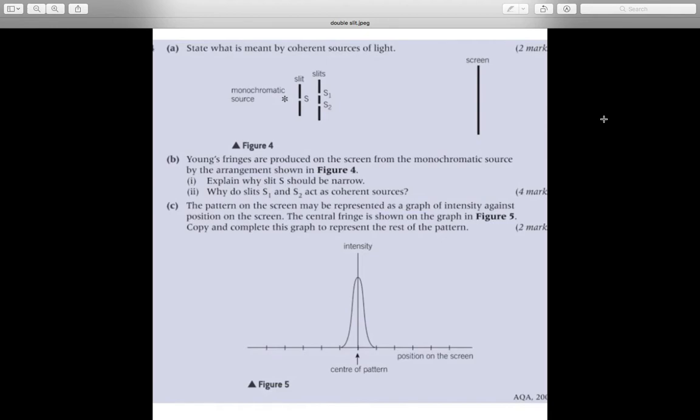Question C: The pattern on the screen may be represented as a graph of intensity against position on the screen. The central fringe is shown on the graph in Figure 5. Copy and complete this graph to represent the rest of the patterns.